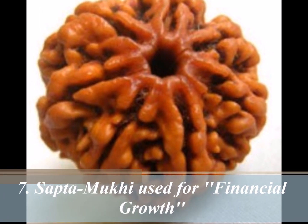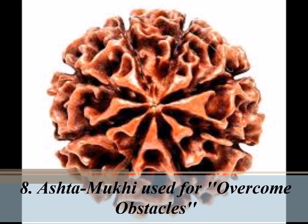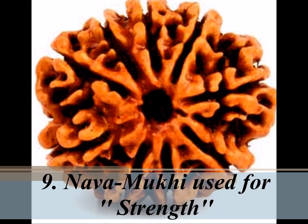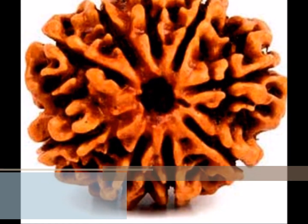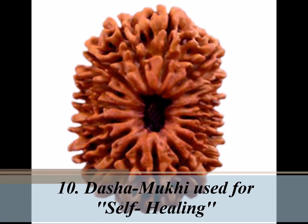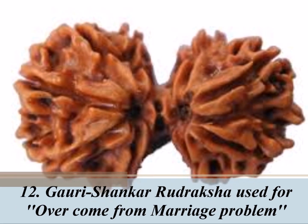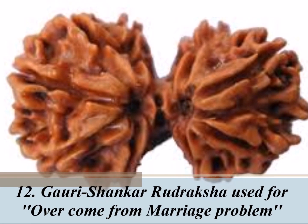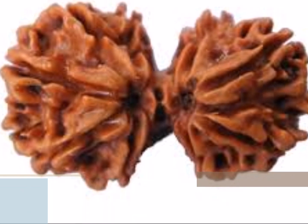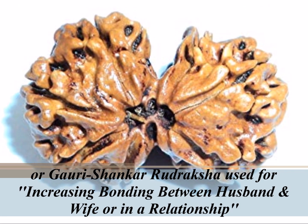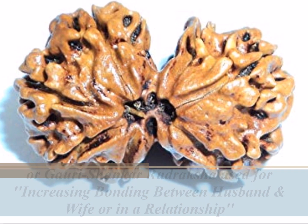Sixth is Shan Mukhi, used for attentiveness. Seventh is Sapt Mukhi, used for financial growth. Eighth is Ashta Mukhi, used for overcoming obstacles. Ninth is Nava Mukhi, used for strength. Tenth is Dasha Mukhi, used for self-healing. Eleventh is Eka Dasha Mukhi, used for fearlessness. Twelfth is Gauri Shankar Rudraksha, used for overcoming marriage problems, or increasing the bond between husband and wife or in a relationship.